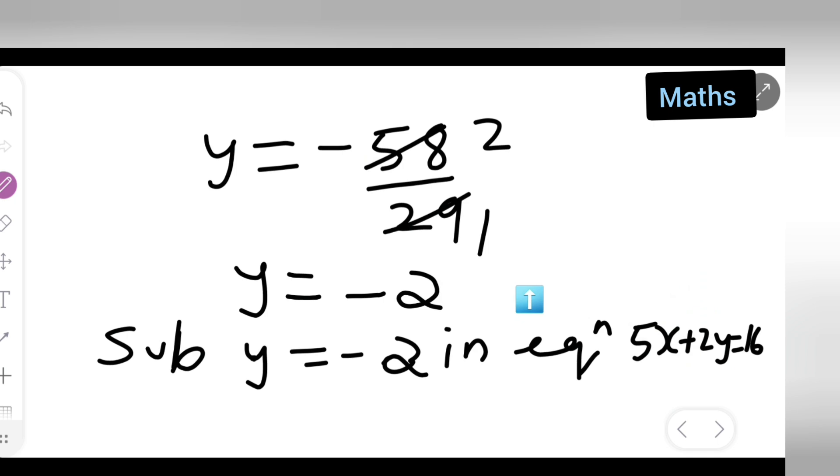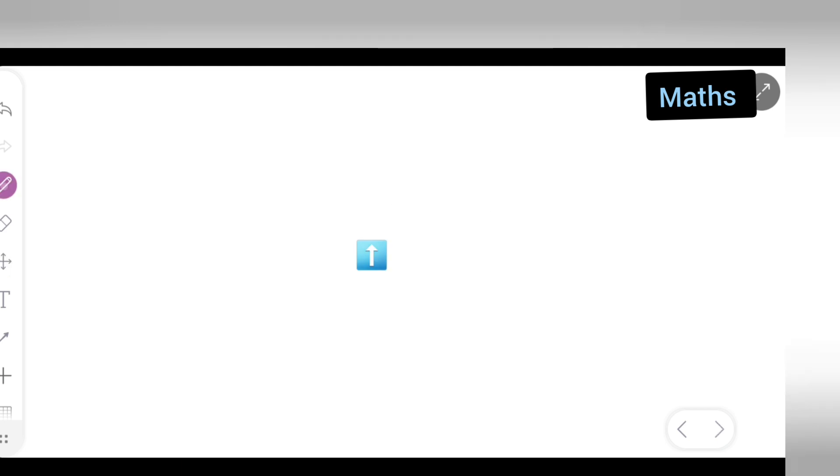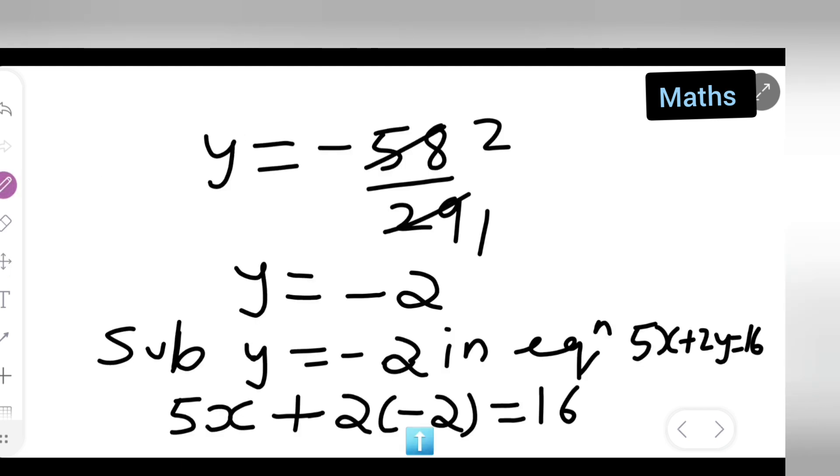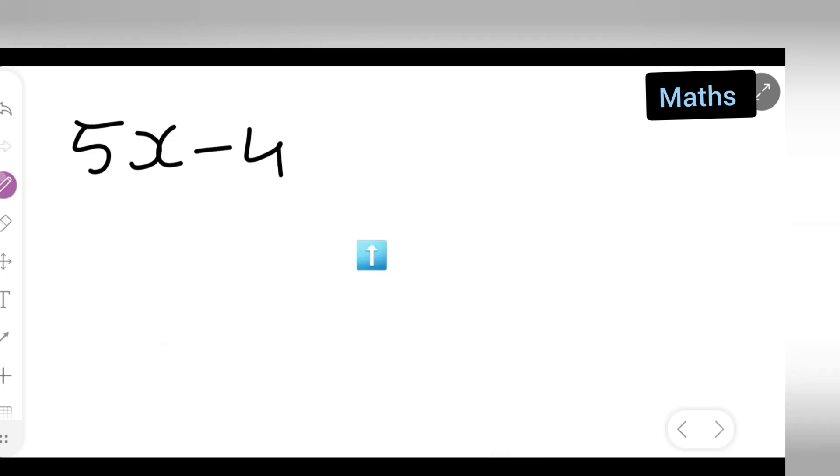5x plus 2y is equal to 16. So you all have to substitute in this. So 5x plus 2 into minus 2 is equal to 16. So what you will have to do is y is minus 2. Now 5x plus minus 4 you will have to write down. So 5x minus 4 because 2 times minus 4 is minus 4 is equal to 16. So write down is equal to 16.